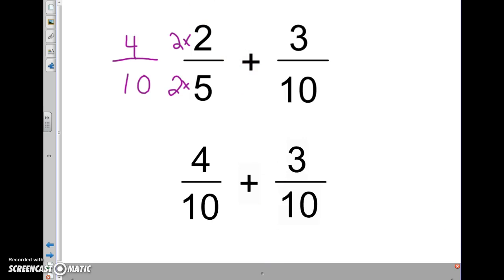When I'm adding 4/10 plus 3/10, the size pieces we're talking about—the denominator—is going to stay the same. I'm still talking about tenths, it's just how many of them, which is what the numerator tells us. So 4 of them plus another 3 of them gives us 7, 7/10.